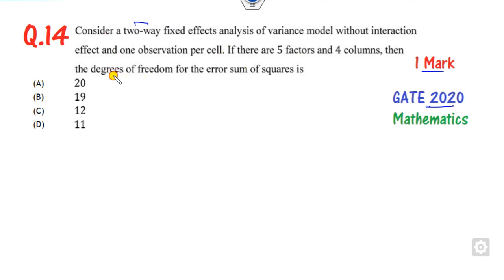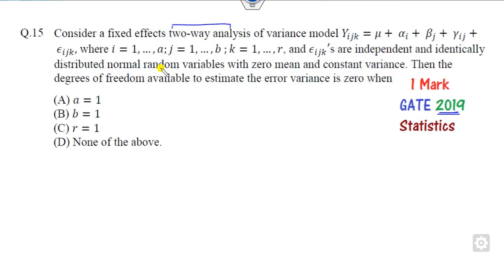In this question you can see they are asking about the degree of freedom while this question they are again asking about the degree of freedom. So that's a very simple task about that. Whenever there is a two-way ANOVA you have to draw this graph, this table.